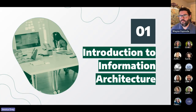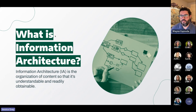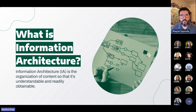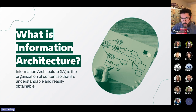Our first chapter is going to be Introduction to Information Architecture. Information architecture is the organization of content so that it's understandable and readily obtainable. The end goal is to ensure that users find the information they need and complete tasks. To accomplish this, you must have a baseline understanding of how that information is presented through systems and accessed by your users.